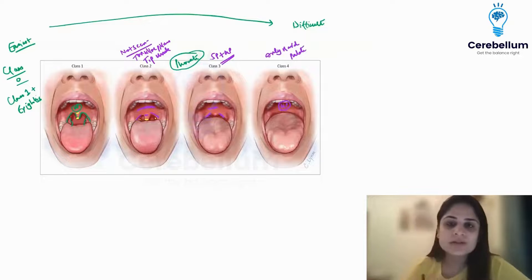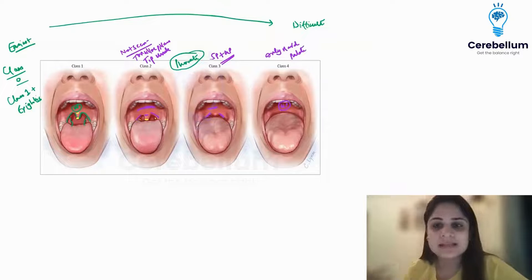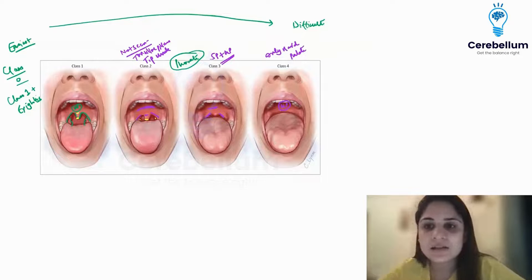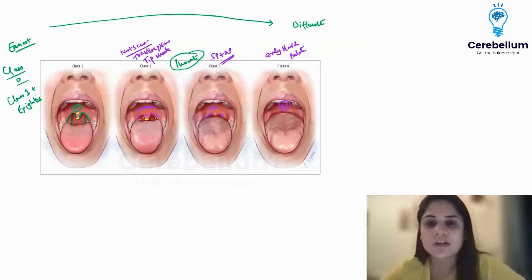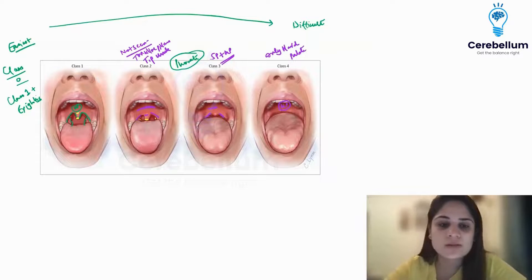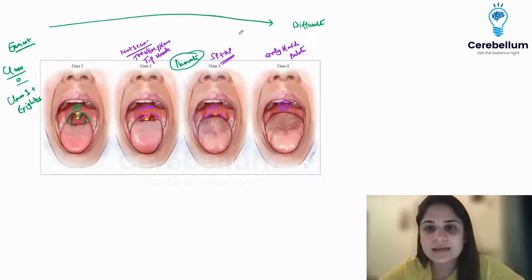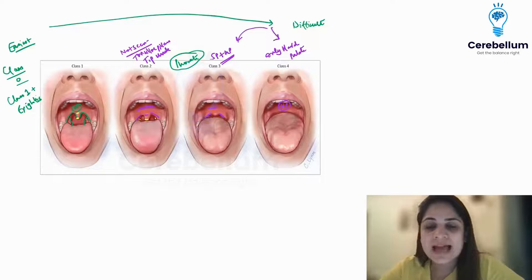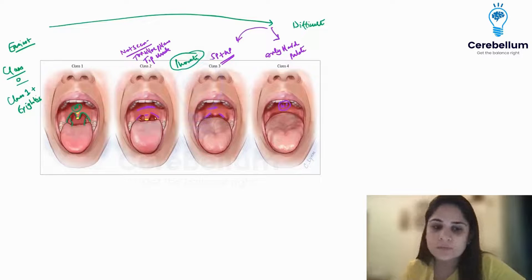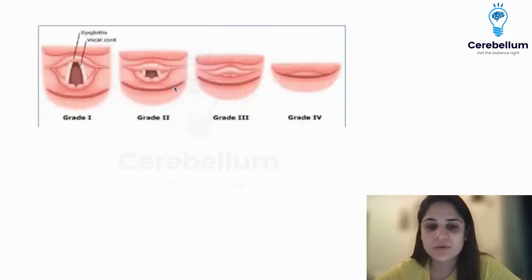If they ask you in the exam which is an anticipated difficult airway — Mallampati class 0, 1, 2, or 4 — Mallampati class 3 and 4 are the difficult airway classes. And if you have to choose one option, then obviously it will be Mallampati class 4.